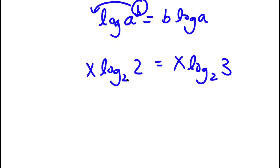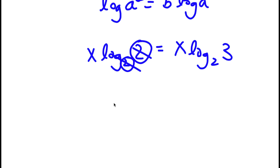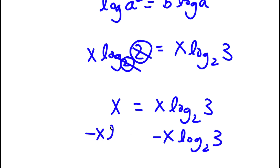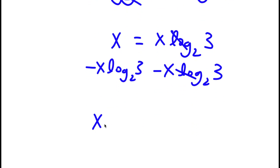Now, log base 2 of 2 — since the base and the argument are the same — simply equals 1. So from my left hand side, I'm simply left with x is equal to x times log base 2 of 3. Now I'm going to subtract x times log base 2 of 3 on both sides, so those two cancel out, and I'm left with x minus x log base 2 of 3 is equal to 0.